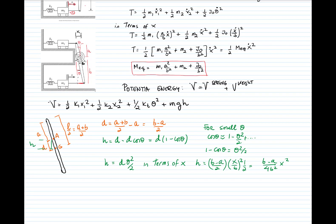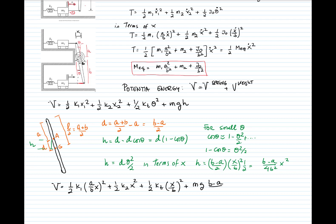Now that we have H, let's substitute back into the potential energy. We have one-half K1 times (A over B times X) squared, plus one-half K2 times X squared, plus one-half K_torsional times (X over B) squared, plus MG times (B minus A) X squared divided by (4B squared). Taking the common X squared factor out and grouping into a bracket gives the equivalent spring constant expression.